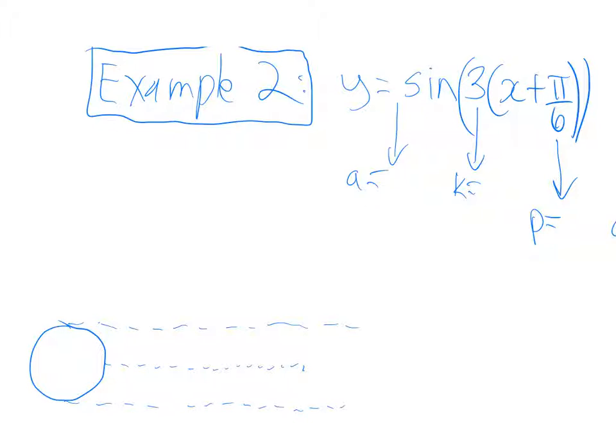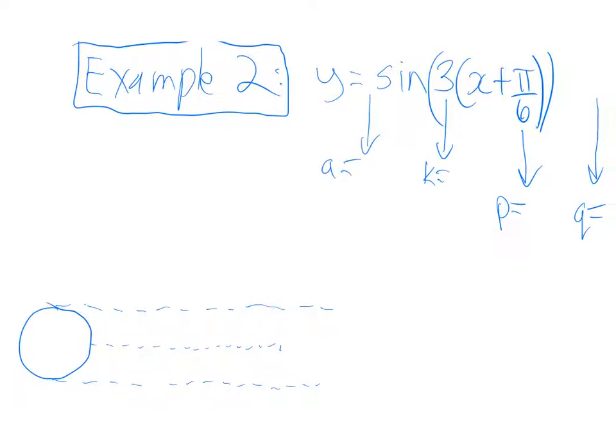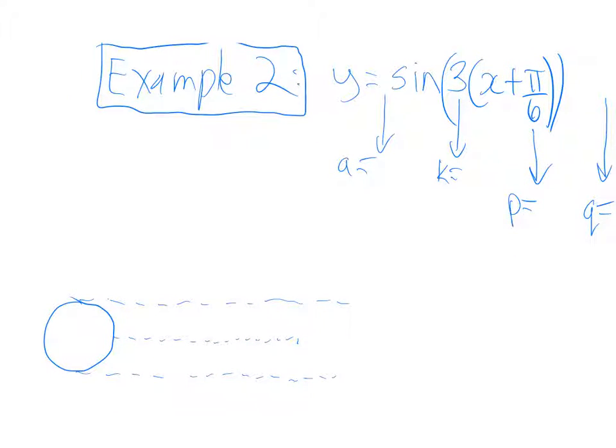Let's try another example. Here's example 2. So in this case, I've got the example up here on the right side, right there. So there's no number in front of the sign, which means we've got a value of 1. k is 3, which means it's rotating 3 times as fast. And then this plus pi by 6 means it's a negative phase shift of pi by 6. There's no q value. So that makes q worth 0.